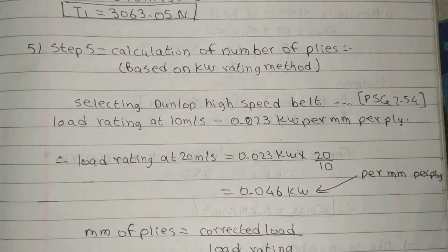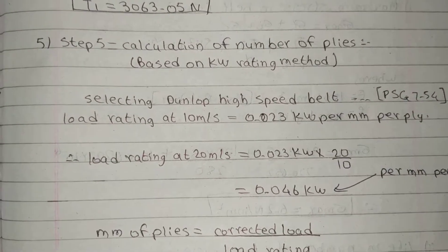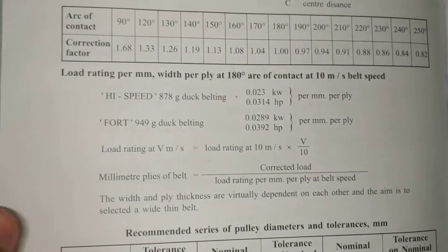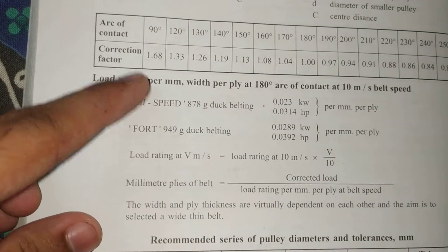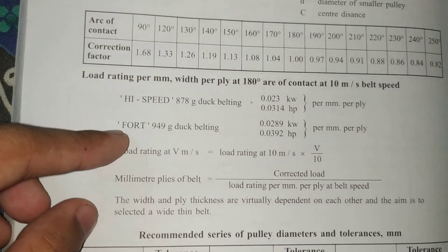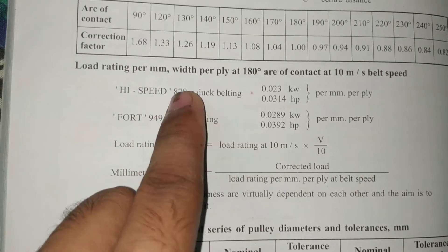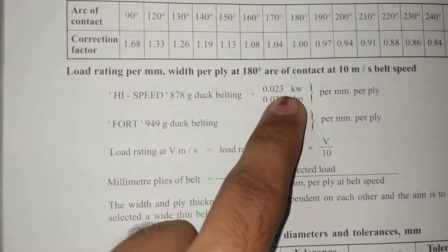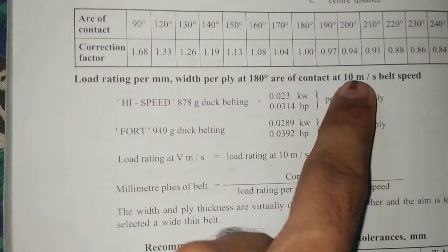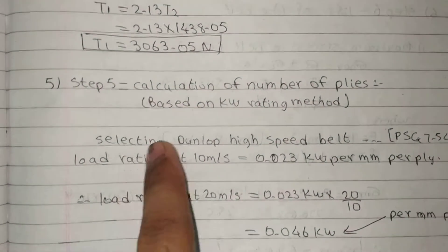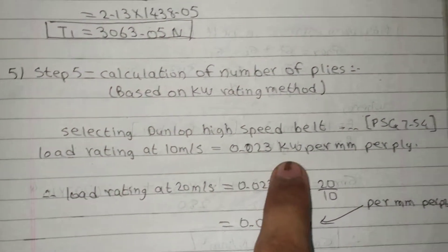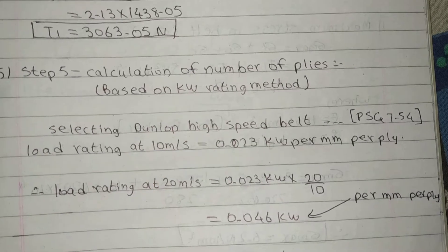Calculation of number of plies based on kilowatt rating method, PSG 7.5 foot. We have two conditions: high speed and low speed. High speed duck belting, 0.023 kilowatt at 10 meter per second. Selecting dum lock high speed belt, load rating at 10 meter per second is 0.023 kilowatt. This is our V, 20. We have to double: 0.023 plus 0.023, then we have 0.046 kilowatt.